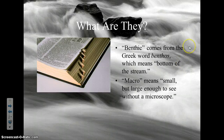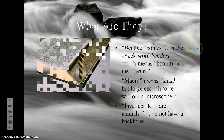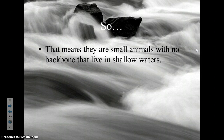Macro means small but large enough to see without a microscope. And invertebrates, you probably already know, are animals that do not have a backbone. So if we put those three parts together, the definition becomes any small animal with no backbone that lives in shallow water.